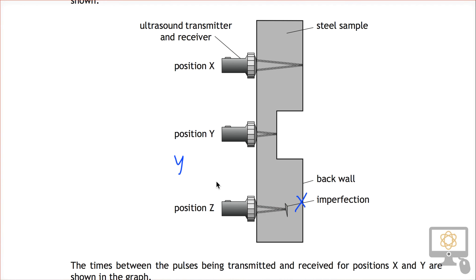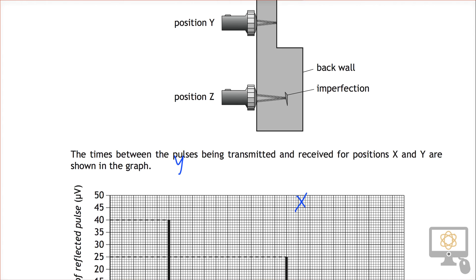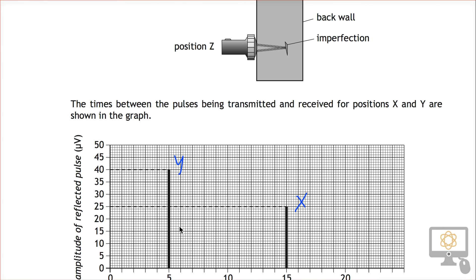It's also going to have the greatest intensity because it doesn't have to travel through as much steel. So it's not going to have the ultrasound absorbed by the steel. That also makes sense. Y has got the greatest amplitude reflected as well as being the quickest.